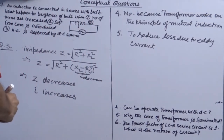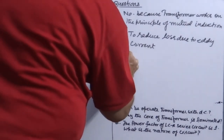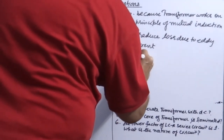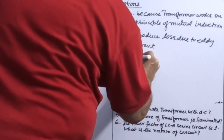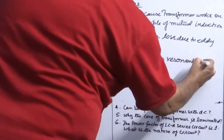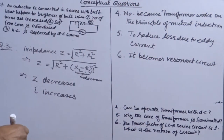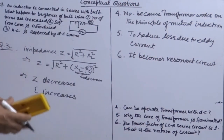Question number six: the power factor of an LCR circuit is 1. What is the nature of the circuit? Answer: it becomes a resonant circuit. These are the answers for questions four, five, and six.